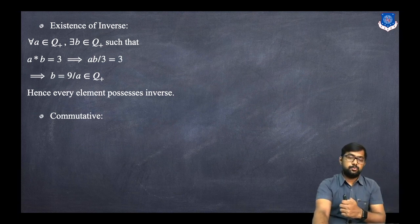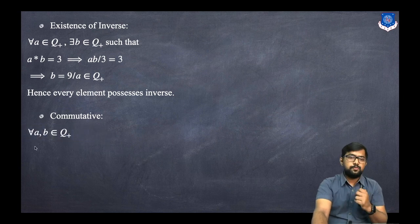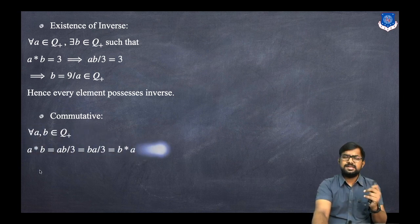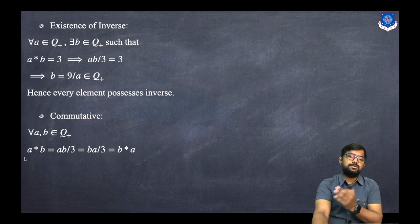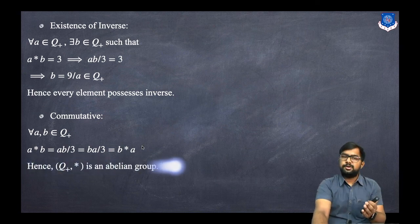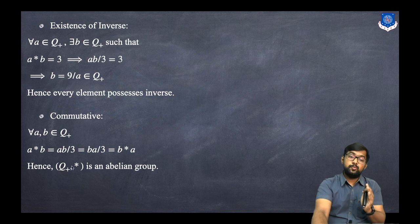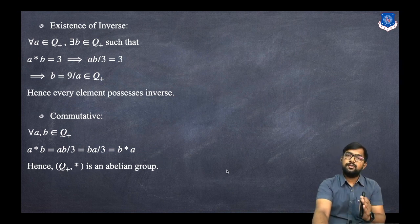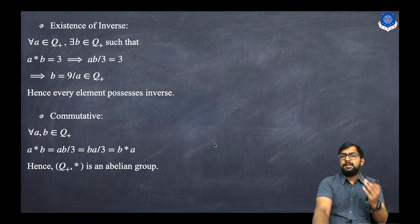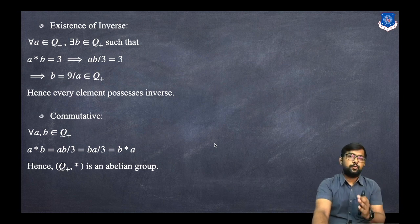Finally, for commutativity: for every a, b in Q+, a star b = ab/3, and b star a = ba/3, which equals ab/3. So a star b = b star a, hence star is commutative. Therefore (Q+, star) is an abelian group.